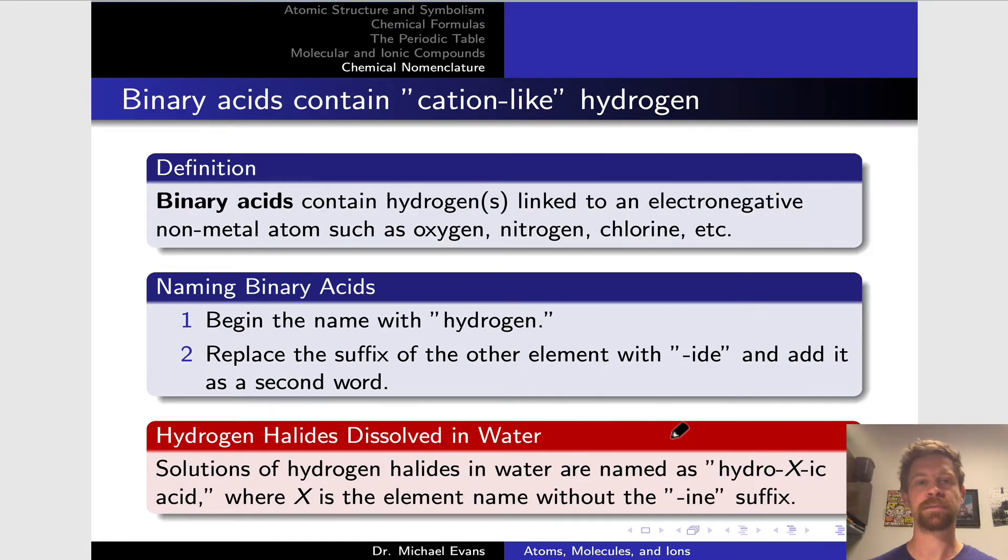So that's a general approach to naming molecular compounds. Certain types of molecular compounds are approached in different ways. Binary acids, for example, contain hydrogen linked to an electronegative non-metal atom. We would represent these in general as something like HₘXₙ - some number of hydrogens linked to some non-metal atom X. These are called binary acids, particularly when X is relatively far to the right on the periodic table - group 17, group 16, group 15. Compounds of nitrogen, sulfur, oxygen, and the halogens - fluorine, chlorine, bromine, iodine - are what we think of as binary acids.